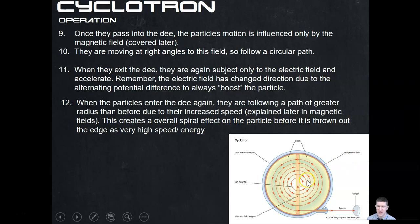It's almost like the analogy of going around a roundabout — as you speed up you can't maintain traction at the inner point, so you start doing bigger and bigger circles and drift outward, creating this large spiral pattern.